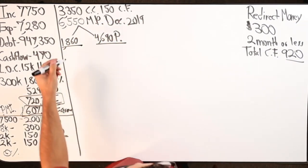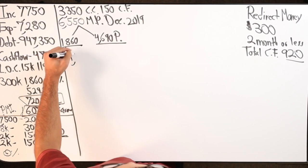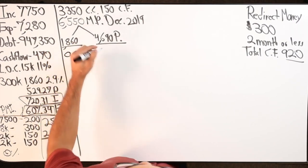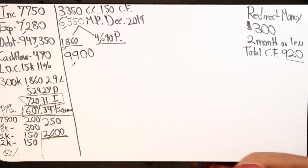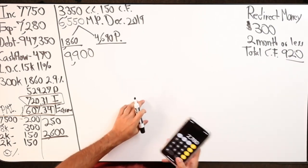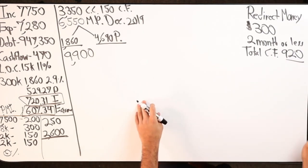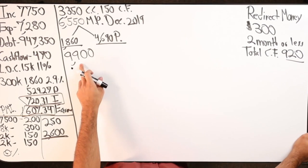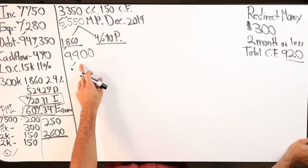$1,860 is going to satisfy December's payment, which means for that one specific month I'll have a temporary cash flow gain of $1,860 on top of my $920. That I gained, $920 plus $1,860 for one month of December, I'll be at a cash flow of $2,780. So my balance on the line of credit will go up to $9,900.